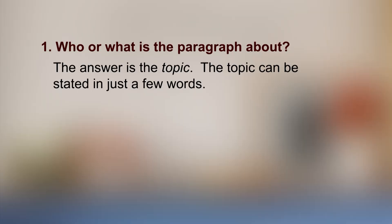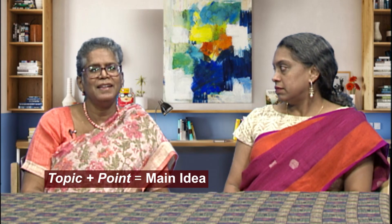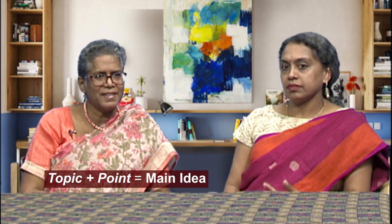To identify the main idea, you should be asking: who or what is the paragraph about? The answer would be the topic, and this could be stated in just a few words. We also have to find out what does the author have to say about the topic, and the answer is the point he is making. The point is also stated in a few words. So once you have identified these pieces, you can combine them to state the author's main idea in a single sentence. Main idea is the topic plus the point.